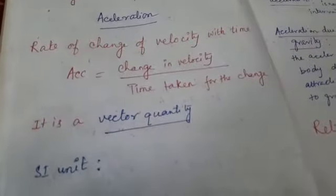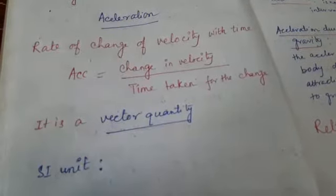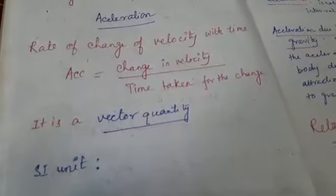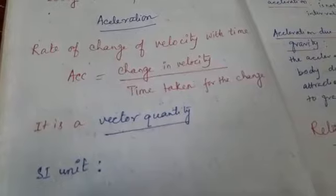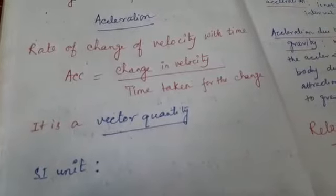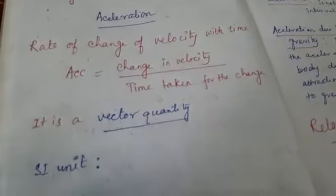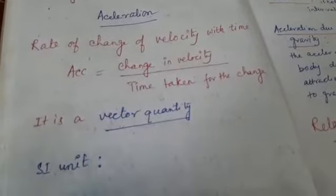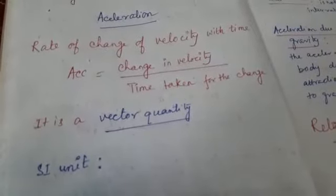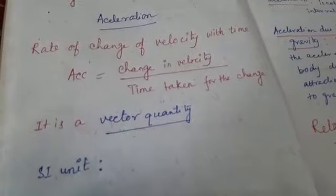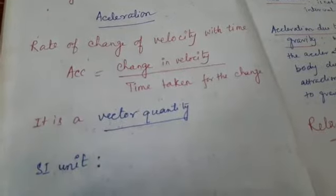Now what actually is acceleration? Acceleration is rate of change of velocity with time. So acceleration is nothing but change in velocity divided by time. We already know this — I have told this also while explaining the derived quantity acceleration, its derivation, its formula.